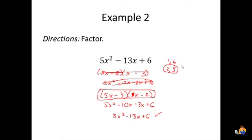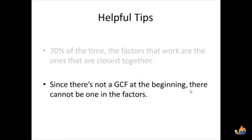Were we sure the answer didn't involve the 1 and 6 factors? No, we weren't sure, but 70% of the time the factors that we want to use are the ones closest together, so we just try those first. It won't always work, but it's a good start.